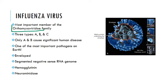Influenza is a member of the orthomyxoviridae family — it's actually the most important member of that family. This differentiates it from the paramyxoviruses, which we also discuss in the Cameron Thompson part two self-study guide. One method for studying flu is to compare it to the paramyxoviruses, because there are some important distinctions there. There are three types of flu: A, B, and C.